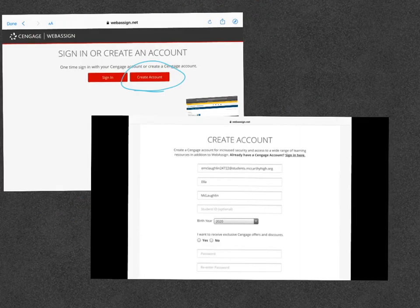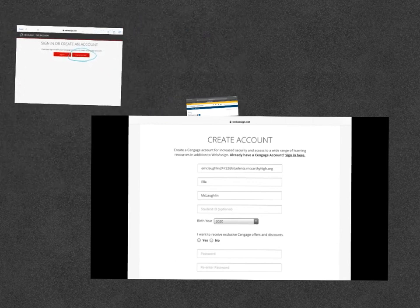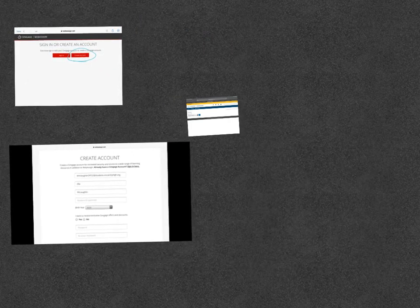Alright. So it should be, again, create account. Then your name. Your email. Your birth year you need to select. I would put no for exclusive Cengage offers, but that's up to you. Enter your password and then create the account. Anybody not able to do that?